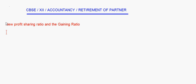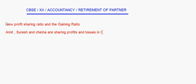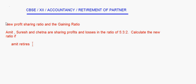I'll take up a question here. Amit, Suresh, and Chetna are sharing profits and losses in the ratio of 5:3:2. Calculate the new ratio if Amit retires, Suresh retires, or Chetna retires.